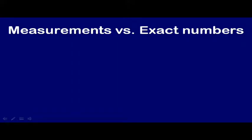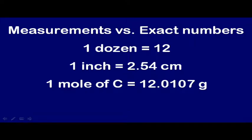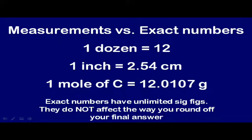And by the way, as we talk about rounding off our answers, it is based on measurements, which are not the same as exact numbers. So if you had a calculation involving dozen, where one dozen equals twelve, those are exact numbers, and you would not round off your final answer based on one significant figure. One inch equals 2.54 centimeters. One mole of carbon is equal to 12.0107 grams. These are all examples of known facts in either math or science, and these are exact numbers, which will have unlimited number of sig figs. They will not affect the way we round off our final answer.